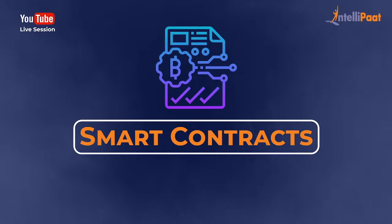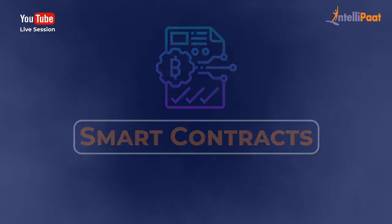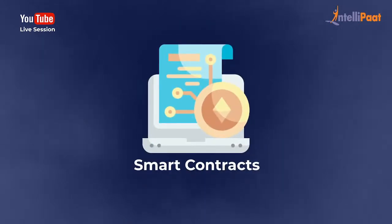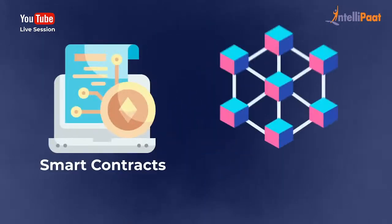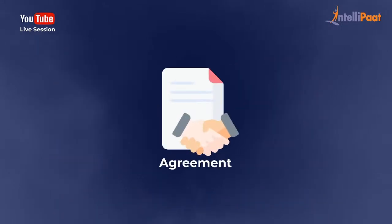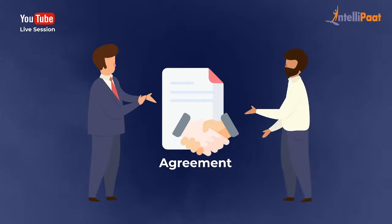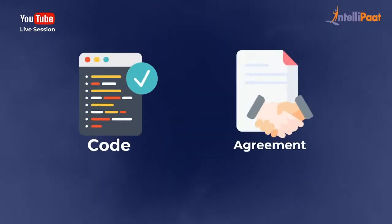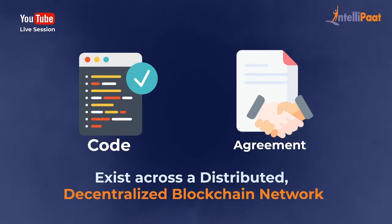Hello everyone and welcome to today's session on Smart Contracts by Intellipad. Smart Contracts are simply programs stored on a blockchain that run when predetermined conditions are met — an agreement between buyer and seller being directly written into lines of code. The code and the agreements contained therein exist around a distributed decentralized blockchain network.